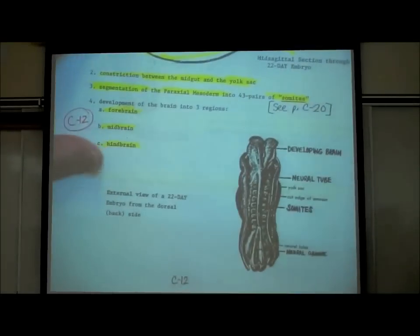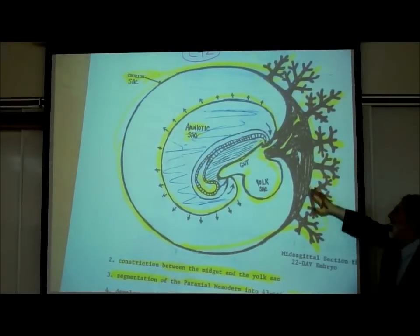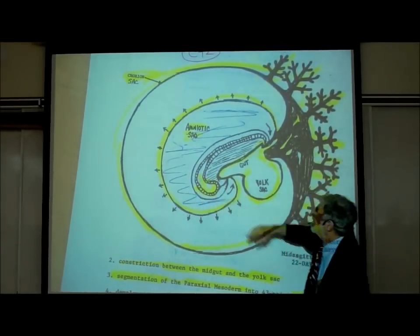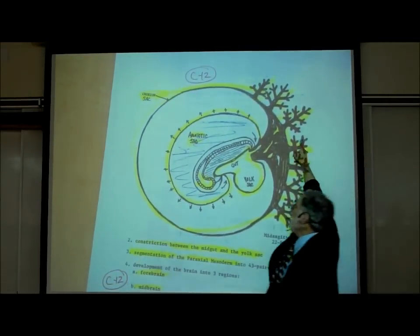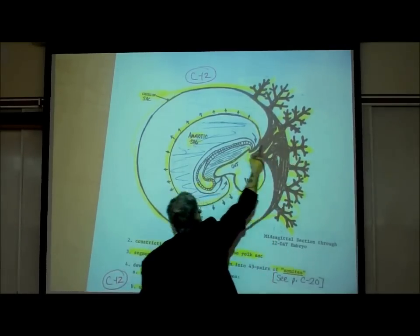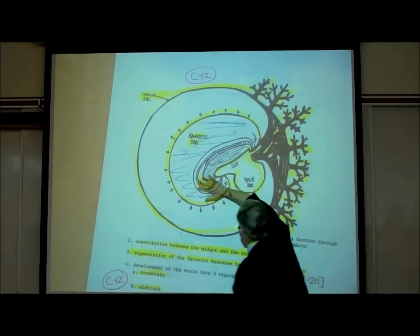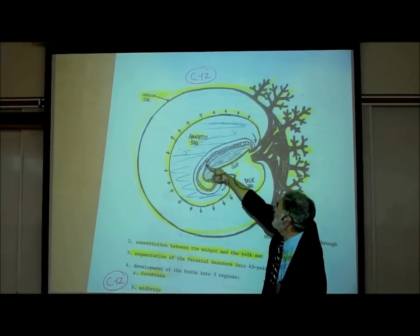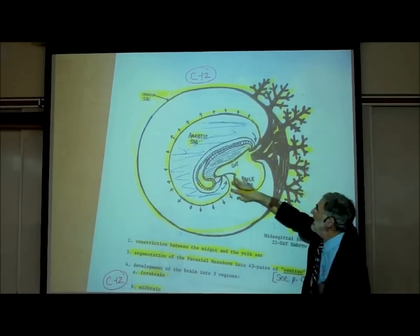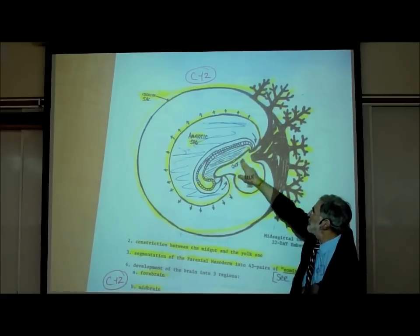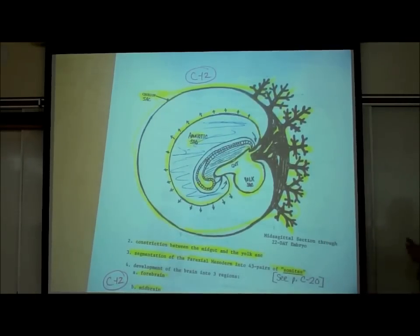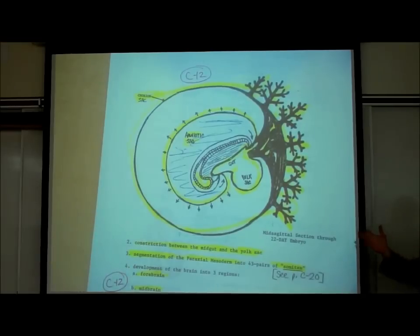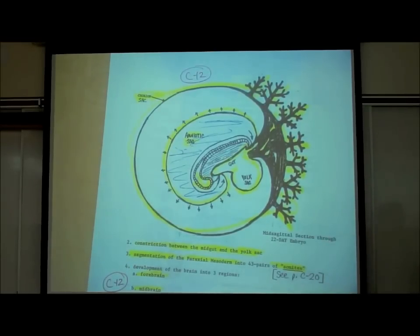On page C12, here's a side cutaway view — a midsagittal section through the embryo. Here's the outer chorionic sac with chorionic villi, the inner amniotic sac, the neural tube forming the brain and spinal cord, and the alimentary canal or gut forming in the yolk sac. I'm not asking you to draw this picture — I'm just showing you one of the intermediate stages of what's happening.